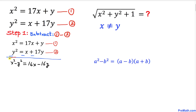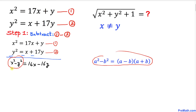On the left-hand side we have a difference of two squares, so we use the formula a² − b² = (a − b)(a + b). Factoring gives us (x − y)(x + y). On the right-hand side we factor out 16, giving 16(x − y).